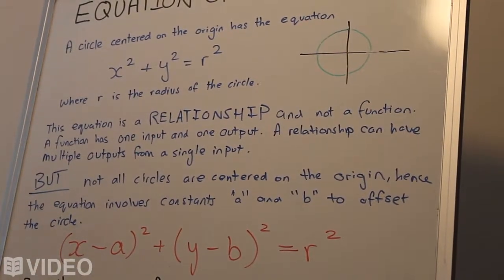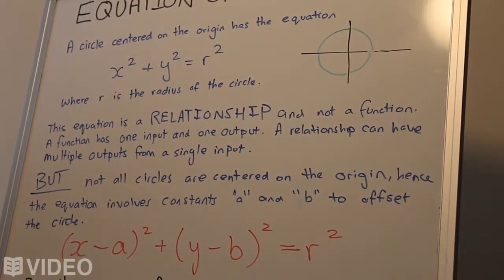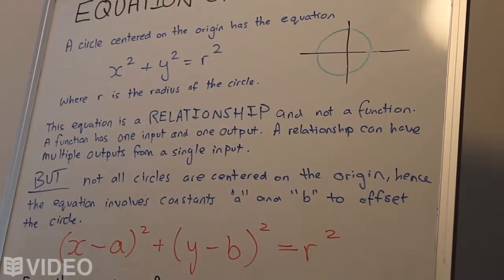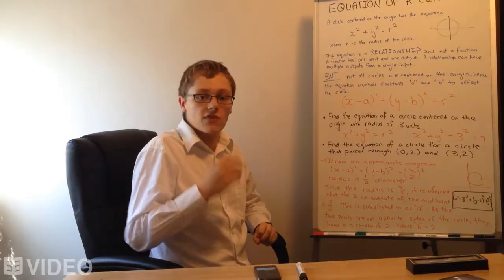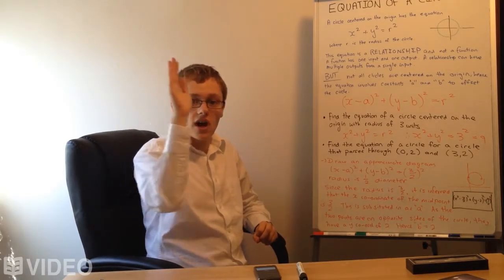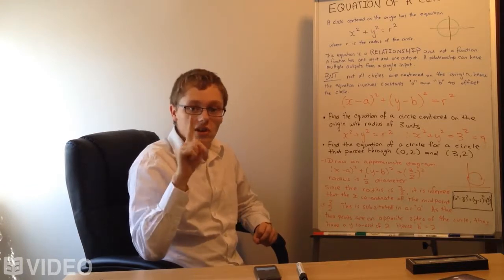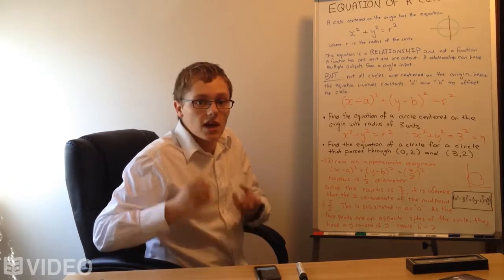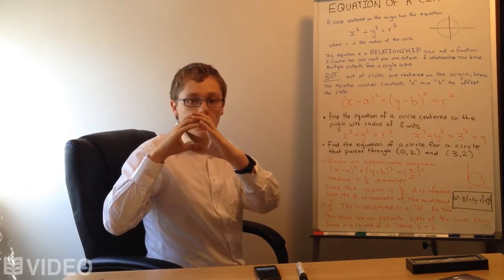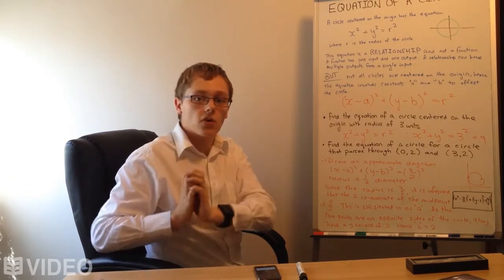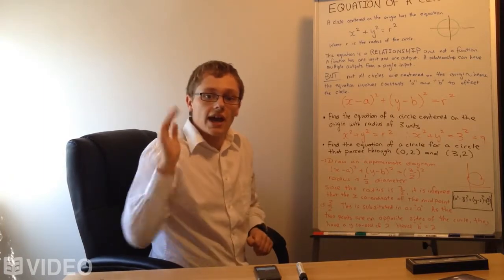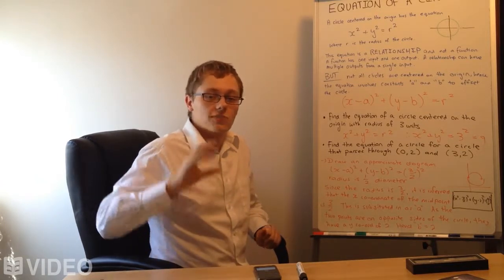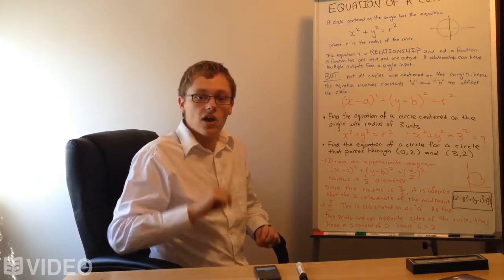The reason is a function has one input and one output. A relationship can have multiple outputs for a single input. So let's think about it in terms of the vertical line test. If you run a vertical line across a function and you only have one output for one input across that entire function, then it's a function. But if you run it across a little circle, for example, and you see that there are multiple outputs for a single input, then it is a relationship. That's a great way to clarify. It's called the vertical line test.